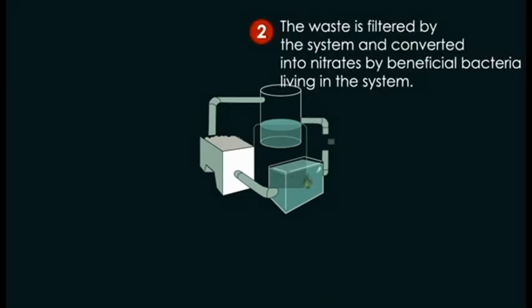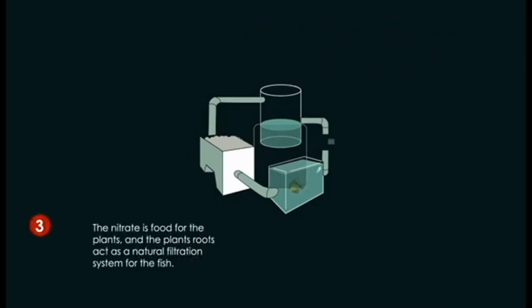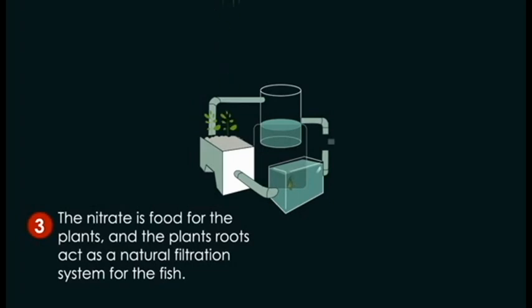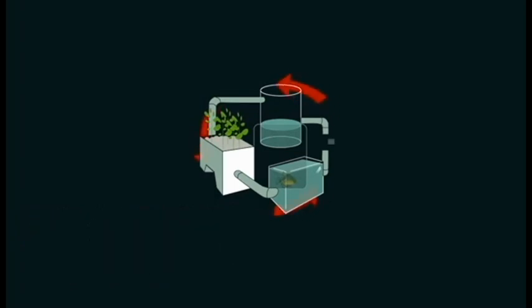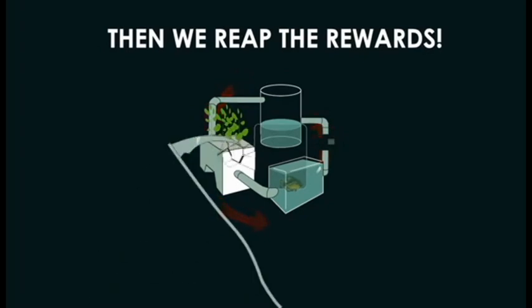The waste is filtered by the system and converted into nitrates by beneficial bacteria. The nitrate is food for the plants and the plant roots act as a natural filtration system for the fish. And then we reap the rewards.